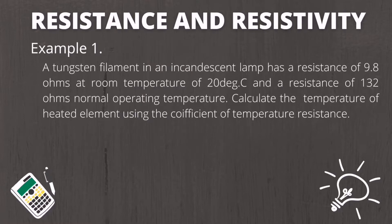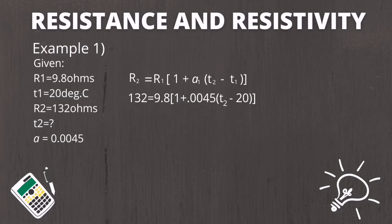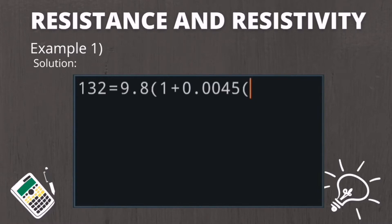For the last example: at normal operating temperature, a tungsten filament lamp has a resistance of 132 ohms, while at room temperature of 20 degrees Celsius the resistance is 9.8 ohms. Find the temperature of the heated element. Given R1 equals 9.8 ohms, T1 equals 20 degrees Celsius, R2 equals 132 ohms, and alpha equals 0.045 based on the table. Using the formula and solving, the temperature of the heated filament is 2791 degrees Celsius.